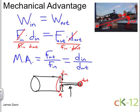If this circle is four times this guy, then the mechanical advantage is simply four.